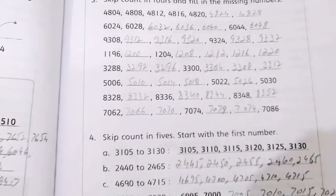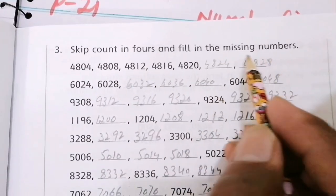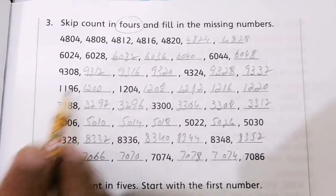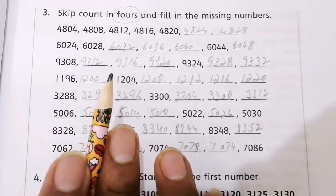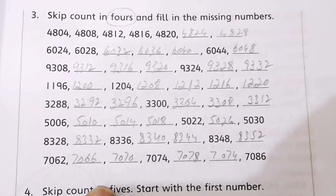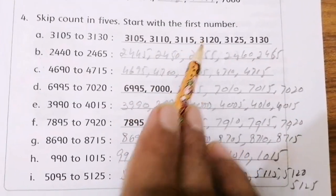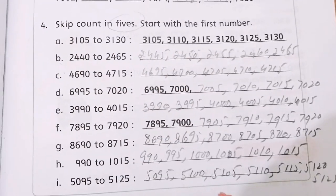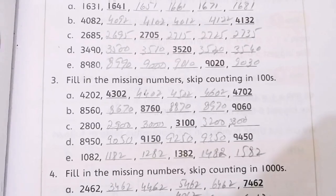This is page number 23. Skip counting here — here it is in 4s. There is a difference of 4 between the numbers. You can practice this and check yourself. Now here is skip counting in 5s. You can see this. Now we move to skip counting here.